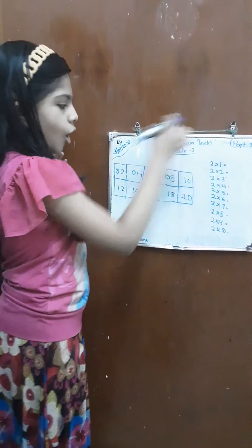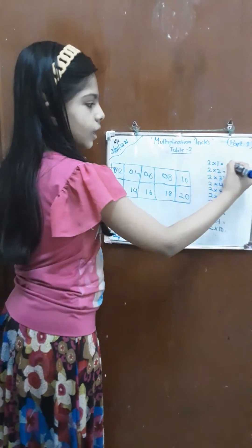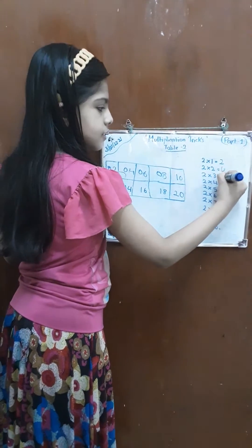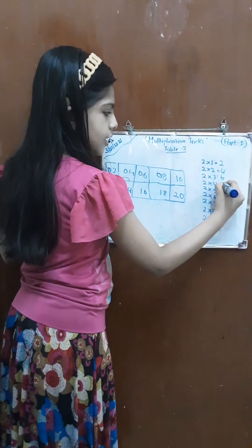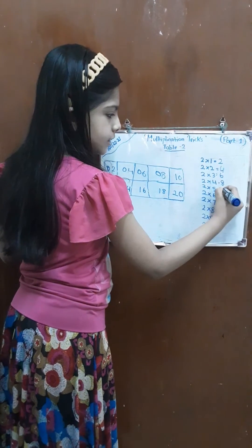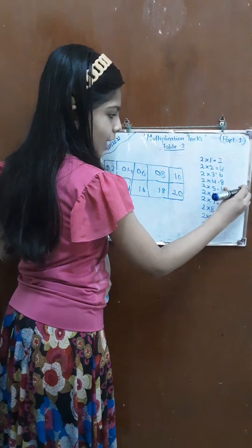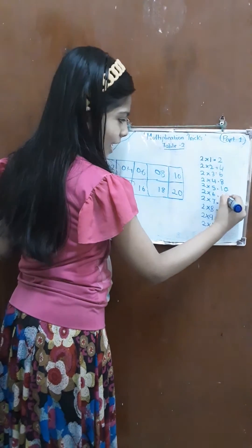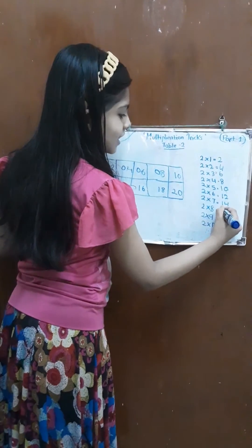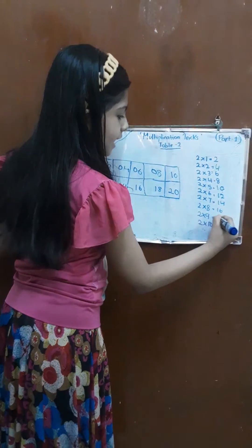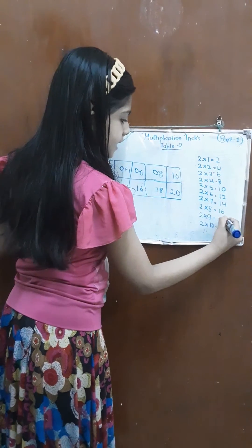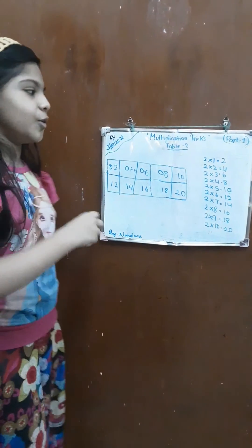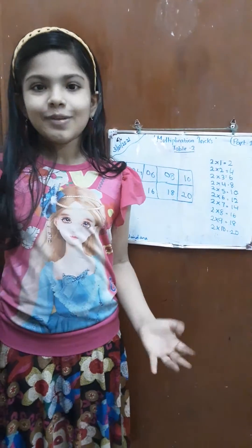Now let's write all these numbers down. We get: 2, 4, 6, 8, 10, 12, 14, 16, 18, and 20. There we go — we got the table of 2.